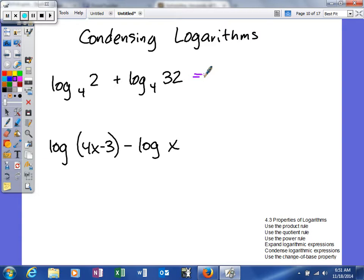So we have log base 4 of 2 plus log base 4 of 32. Right now we have two logarithms and we want to end up with just one. Since log base 4 of 2 is positive it's going to end up in the numerator. Log base 4 of 32 is also positive so it's going to be the product of those two things.